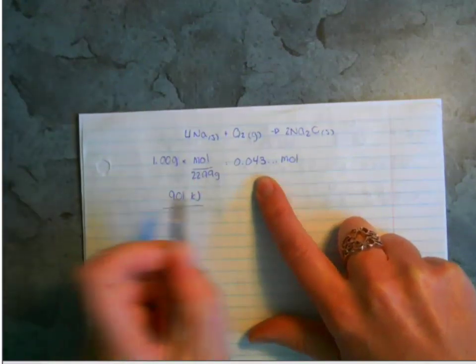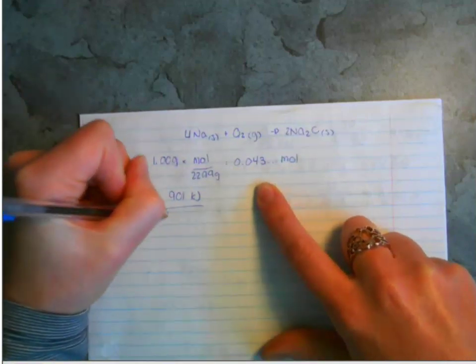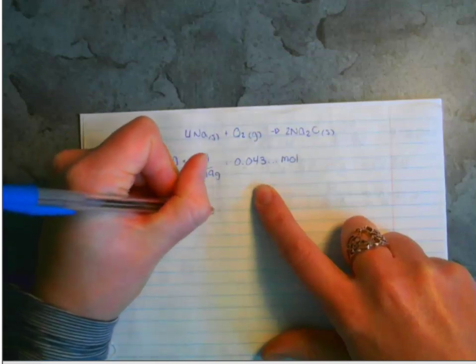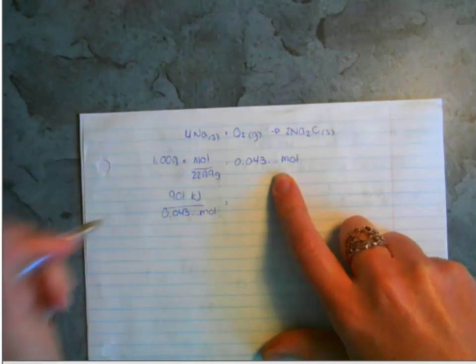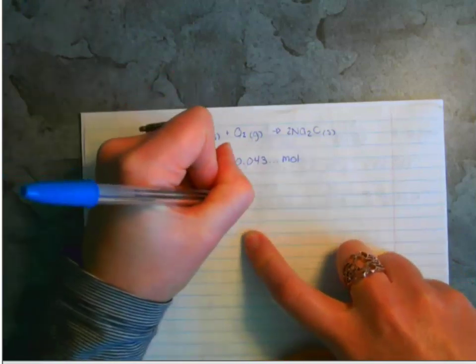...they're released for this number of moles, right, for the one gram which is 0.043 moles. We want to do this calculation to figure out what the kilojoules per mole are.